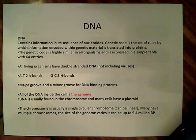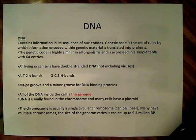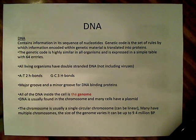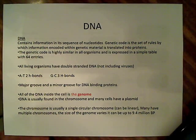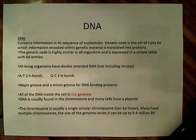I want to start with a discussion in genetics and microbiology, with a little bit of background information on DNA. DNA contains information in a sequence of nucleotides. The genetic code is a set of rules by which information encoded within genetic material is translated into proteins. We use this genetic code — you've gotten a piece of messenger RNA and been asked to find the start codon, which is AUG, and figure out the sequence of amino acids.